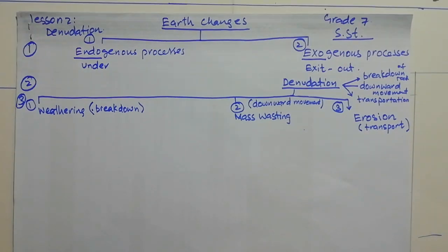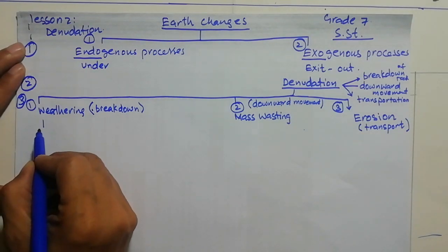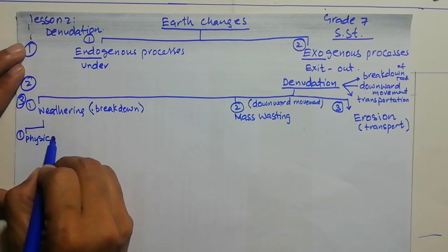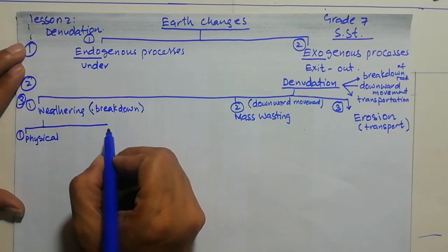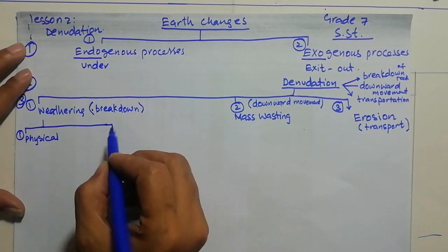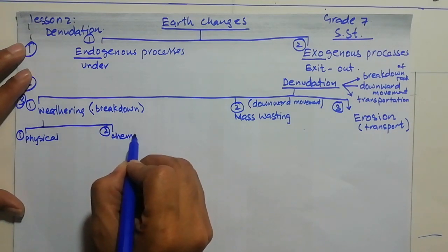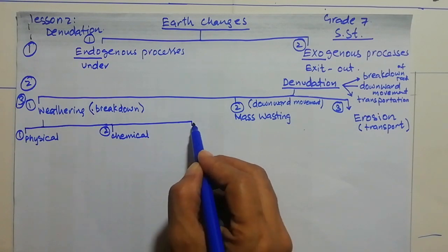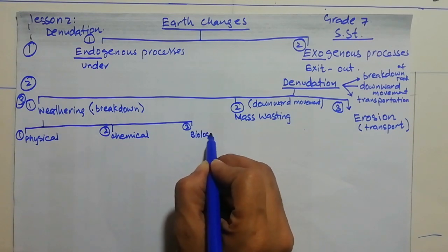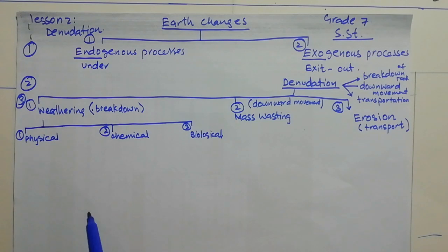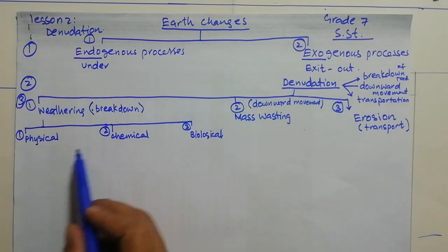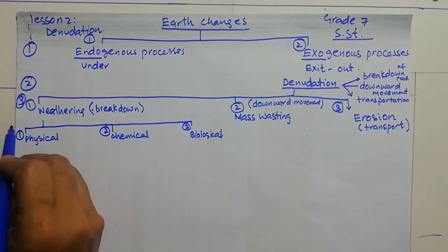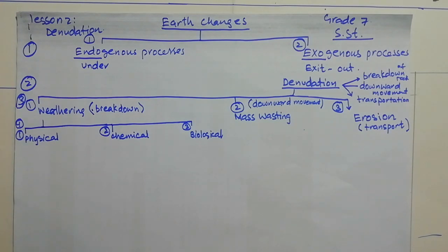Now we take the first process, that is weathering. Weathering has three major types. First one is physical weathering, second one is chemical weathering, and third one is biological weathering. So these three types are involved in weathering. This is now Stage 4 — we are at Stage 4 explanations.